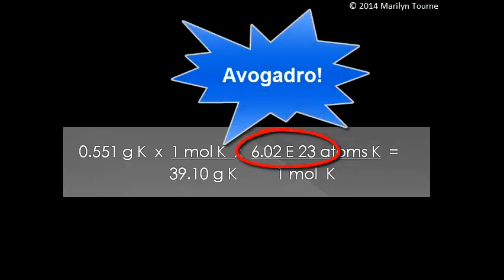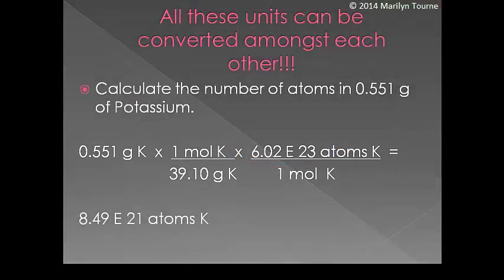The only way that we get to atoms or molecules is through what? I hope you said Avogadro. Avogadro's number is the way that you get from atoms or molecules to grams and moles. So the path is: I take 0.551 grams of potassium, multiply it times the molar mass to get to moles. Since we started with grams on the top, we put grams on the bottom. So grams per mole, and the mole stays on the top. Then we use Avogadro's number. In one mole of potassium, there's 6.02 times 10 to the 23rd atoms of potassium. The answer is 8.49 times 10 to the 21st atoms of potassium.